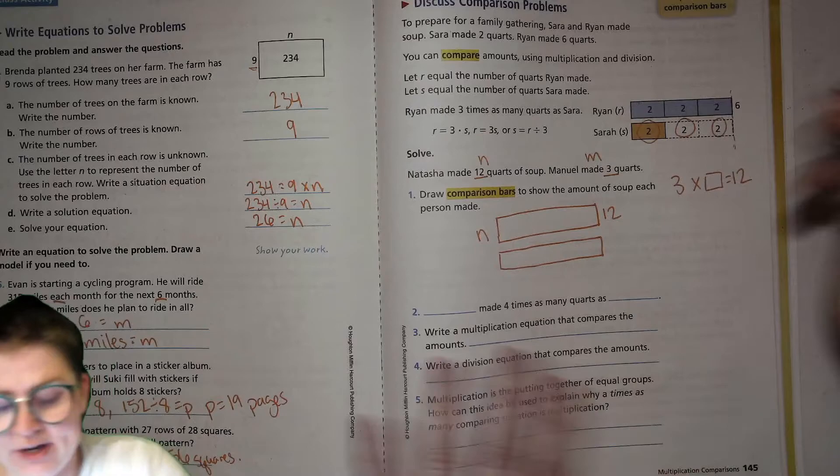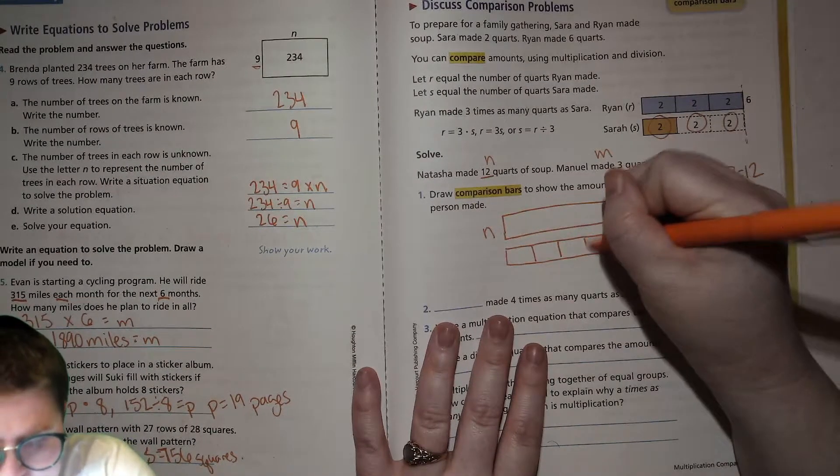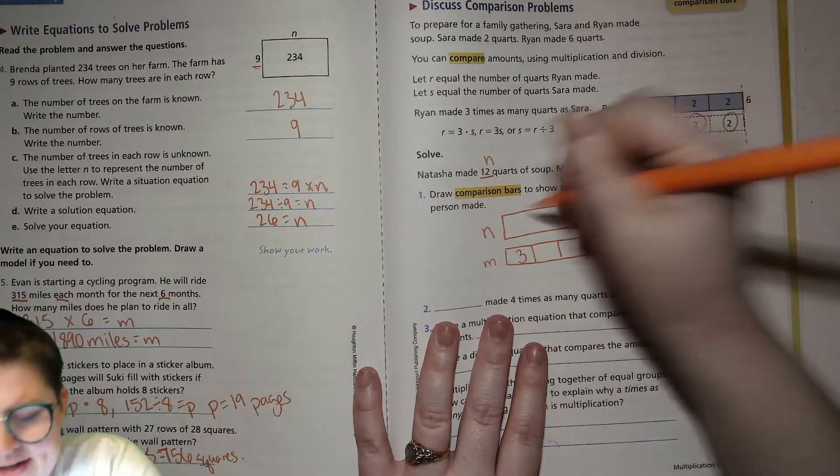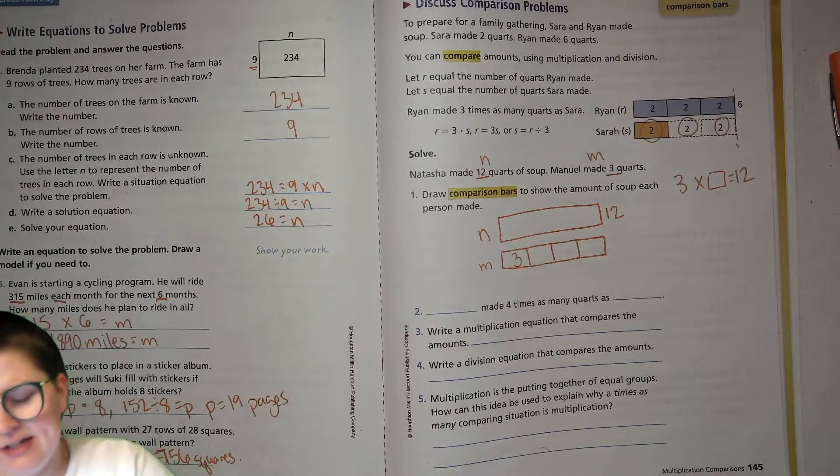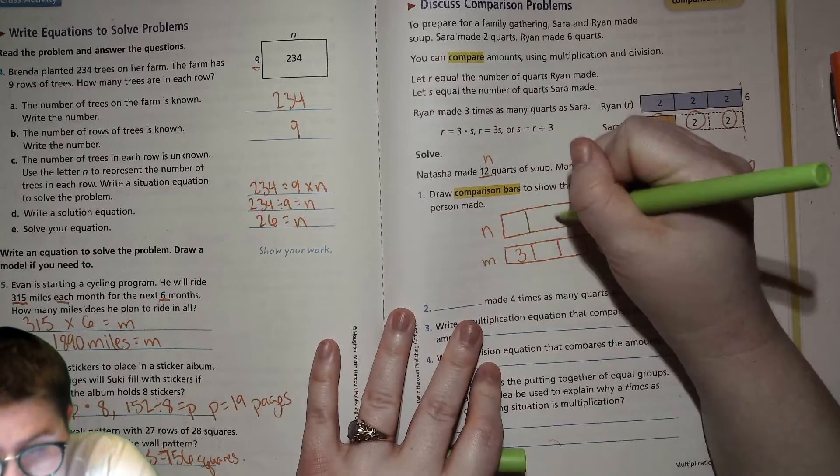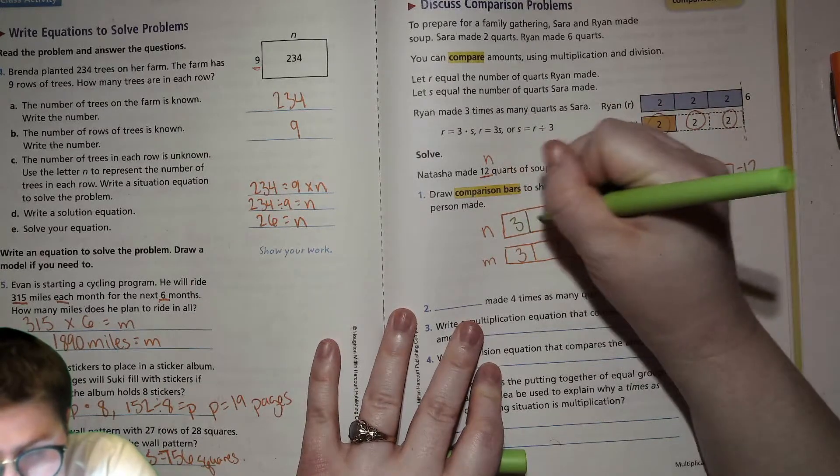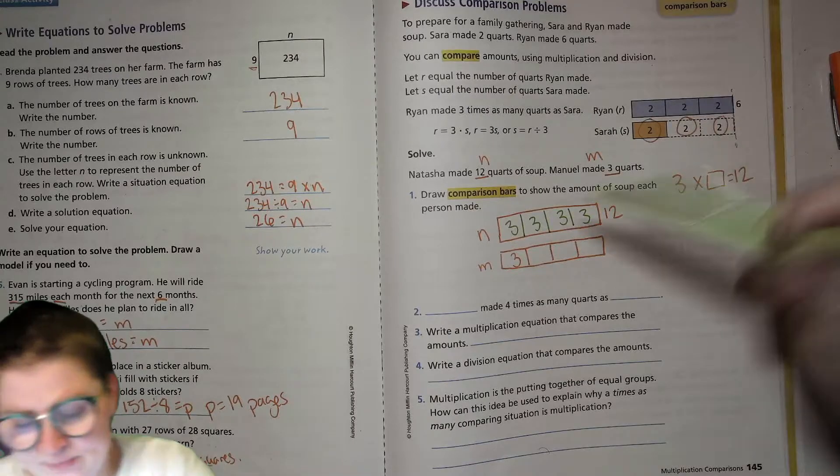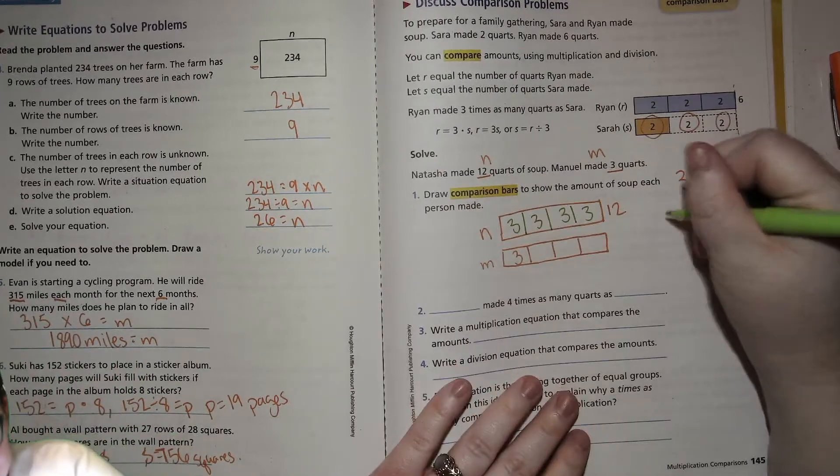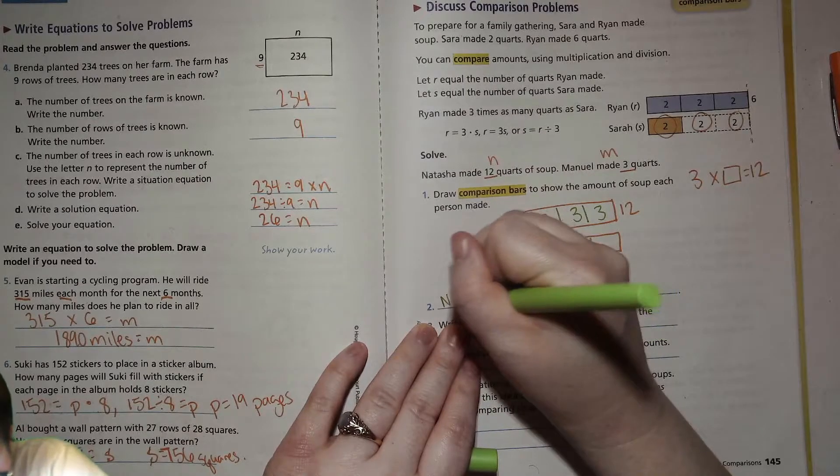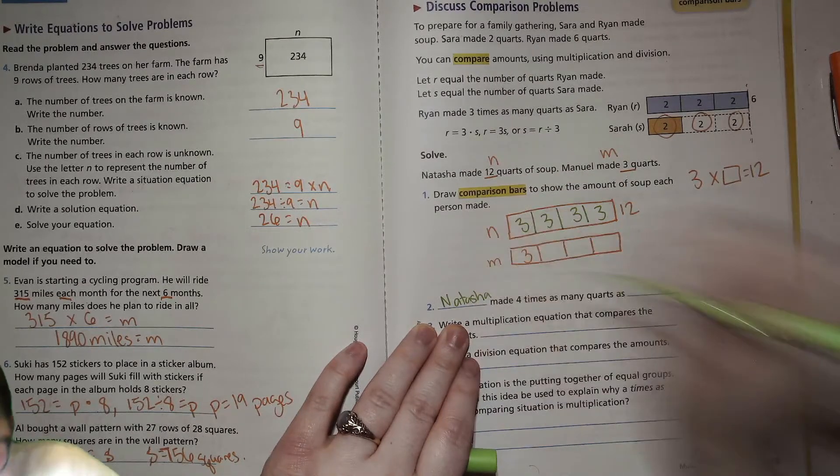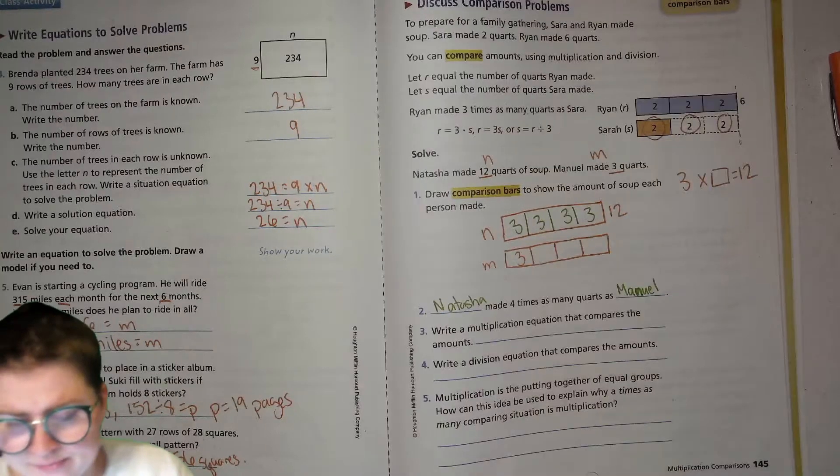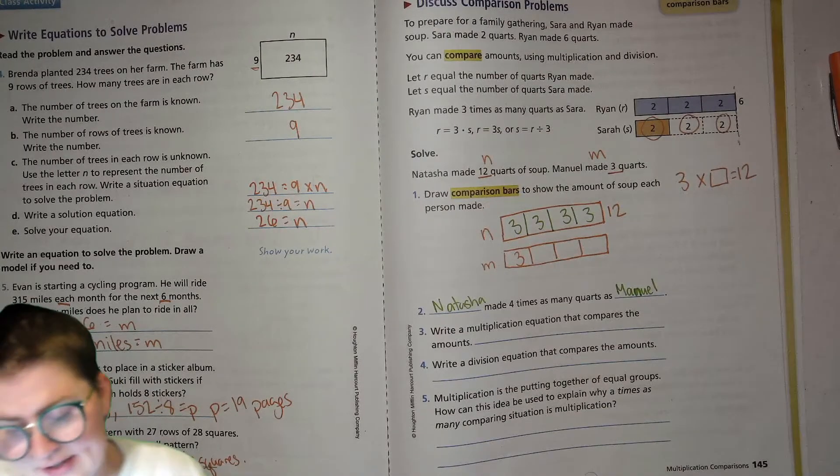Hopefully you've been practicing facts. Three times four is 12, right? So I'm going to break this into fourths. We have Manuel's three right here. And then Natasha's 12 is right there. Then I take another color. You can think about how it's going to take four of Manuel's three. Excuse me, to equal 12.